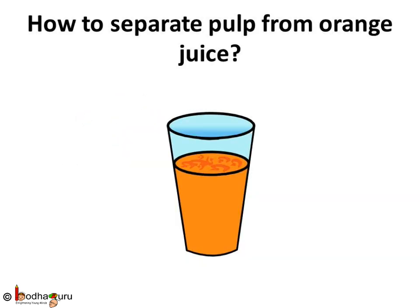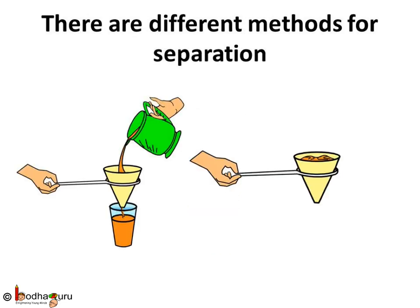Similarly, can we separate pulp from orange juice using hands? No — of course you can try, but that will be very messy and you won't be able to separate all the pulp. So the easiest way would be to use a sieve or cloth, as we use in the case of tea to separate the tea leaves. The separation was possible using this method because the mixture has two different components — one is liquid, that is orange juice, which can pass through the cloth or sieve, and the other is in solid state, that is pulp, which won't pass through.